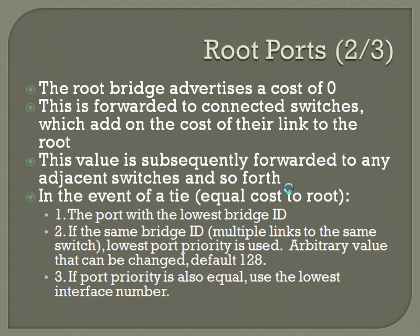In the event of a tie — equal cost to the root on the same switch — it first uses the port connected to the switch with the lowest bridge ID. If it's the same bridge ID, meaning multiple links to the same switch, it uses the lowest port priority among those ports. Port priority is an arbitrary value that can be changed; the default is 128. If port priority is also equal, it uses the lowest physical interface number on that switch.